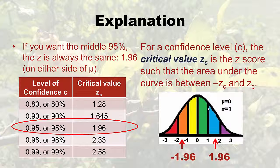For a confidence level C, the critical value Z sub C is the z-score such that the area under the curve between negative Z sub C and positive Z sub C equals C. I know I'm repeating myself, but I'm doing it in different ways because this is a really difficult concept and sometimes people need to hear it differently.